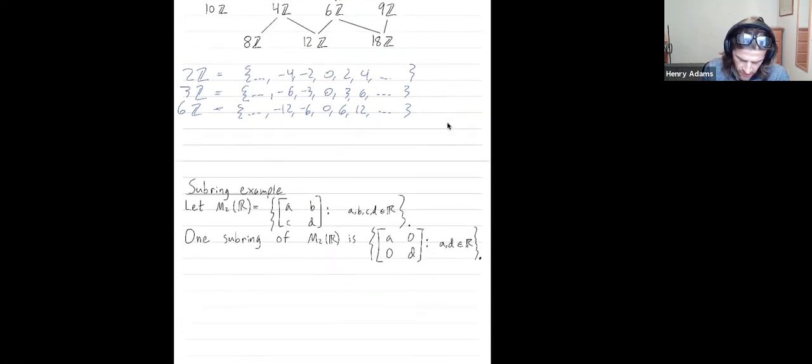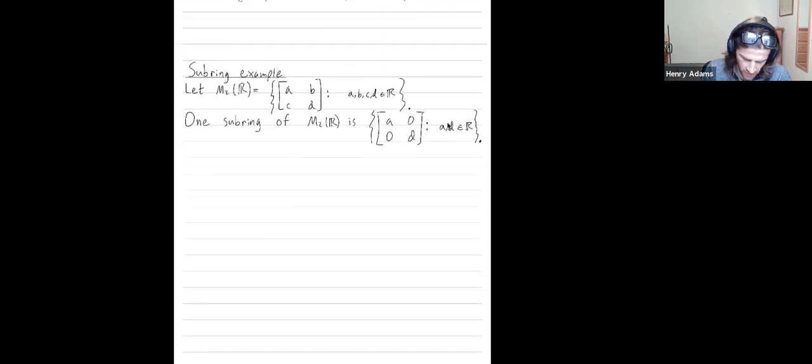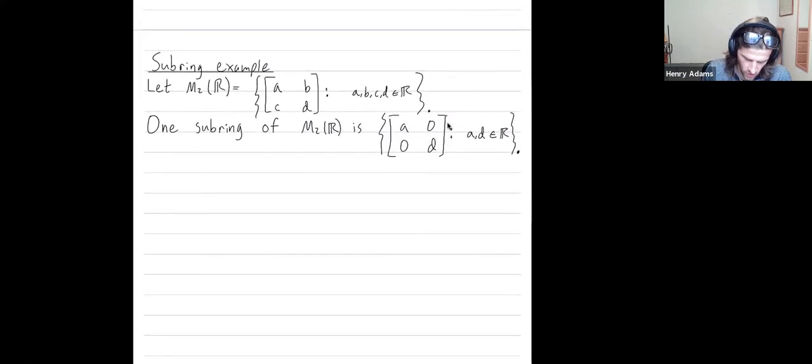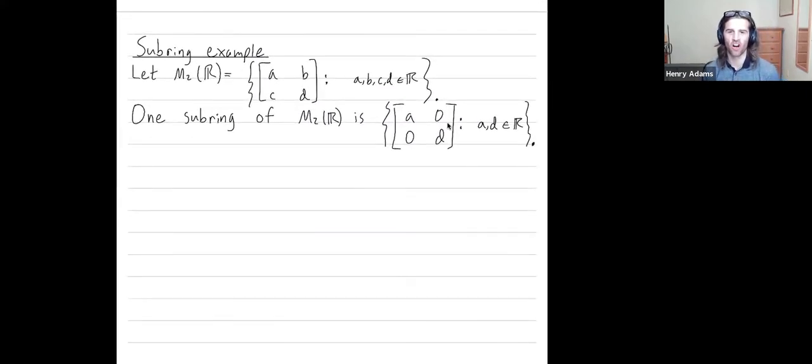I'll finish this video by giving one more example of a subring. So let m2r denote the ring of all 2x2 matrices. So here's a formula for all 2x2 matrices with entries that are real numbers. One subring is the diagonal matrices.